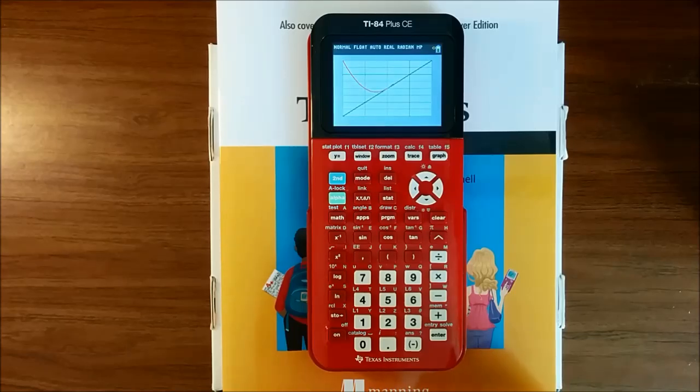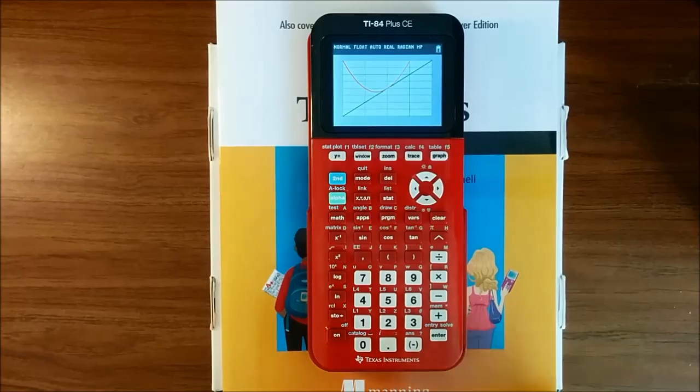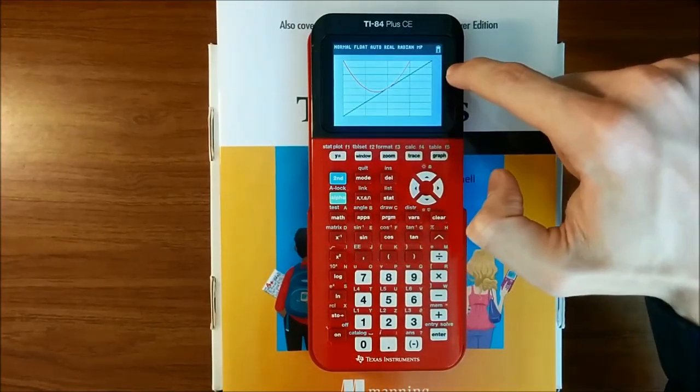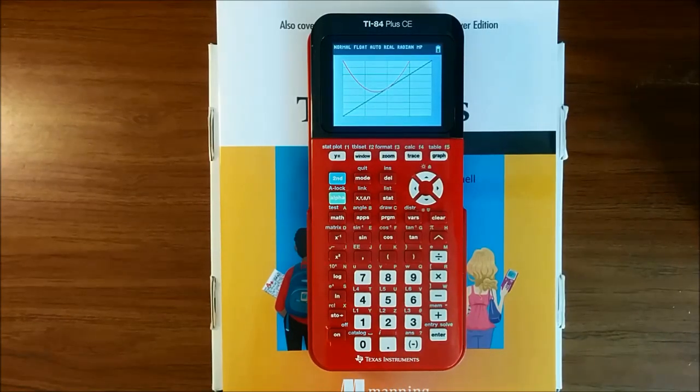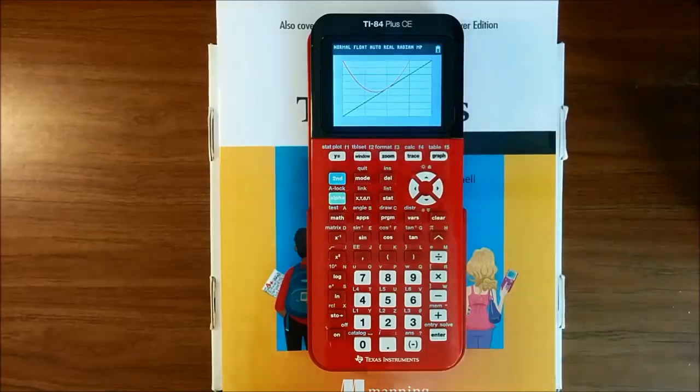And there we go. So we can see that the point of intersection is right here at negative one, negative one. We can see that the y axis is here, the x axis is here. And because we have set our y scale to 0.5, but left our x scale at one, that each of these is one and each of these is 0.5.